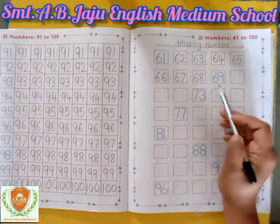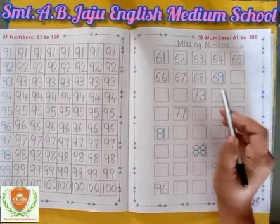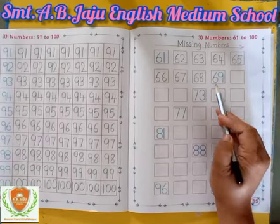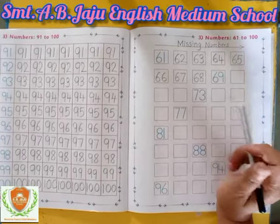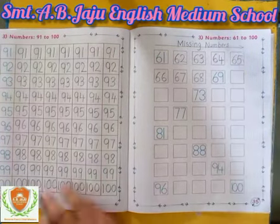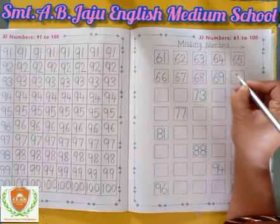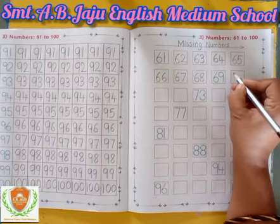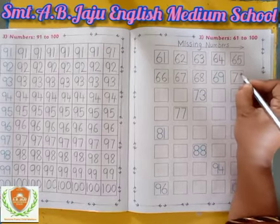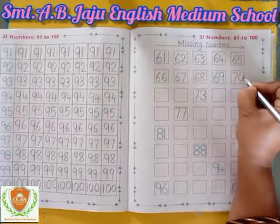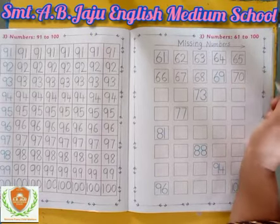Now here, which number is this? 69. After 69, which number will become? 70.